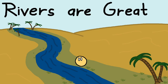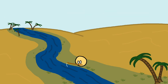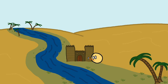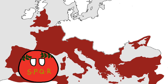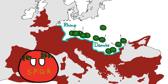Rivers are great. For millennia they helped us survive, enabled us to build the first cities and civilizations, and allowed us to travel and trade. And for millennia we also used rivers as borders. The Romans famously used the rivers Rhine and Danube as borders to the empire, since they offer natural protection against external invaders.